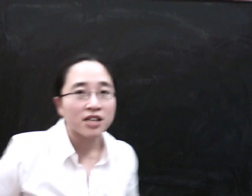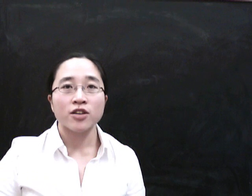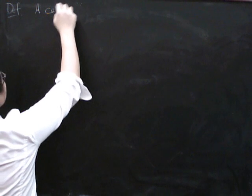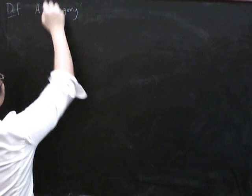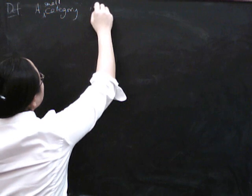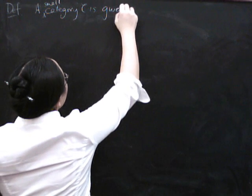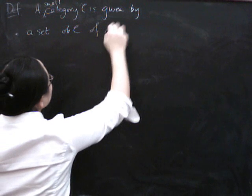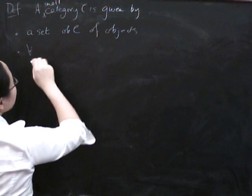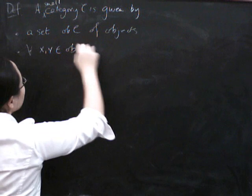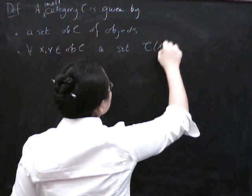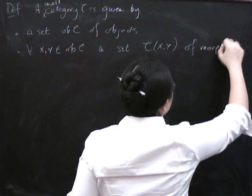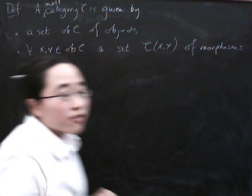So what's a two-category? First let's remind ourselves what a category is. It can be useful to think about it in a particular way so that the generalization looks particularly natural. A small category C is given by a set of objects, and for all pairs of objects X and Y, a set of morphisms.